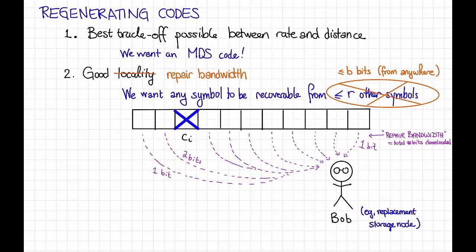This basic idea is called regenerating codes. A regenerating code is an MDS code, so we're still keeping this first desire. But instead of asking for good locality, we're going to ask for good repair bandwidth. What that means is that, once again, we want any symbol to be recoverable with low information, but now that's allowed to happen in a slightly different way. Instead of contacting at most r other symbols, Bob is allowed to contact as many symbols as he likes, other than the one that's not available, but he can download less information from each of them. And we say that the repair bandwidth of the code is the total number of bits that Bob needs to download.